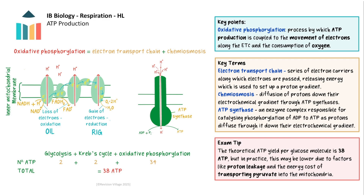34 molecules of ATP are produced in oxidative phosphorylation from the 6 reduced NAD and 2 reduced FAD produced from one glucose molecule. The theoretical ATP yield per glucose molecule is therefore 2 from glycolysis, plus 2 from the Krebs cycle, plus 34 from oxidative phosphorylation, giving a total of approximately 38 ATP. In reality the number varies due to the leaking of protons through certain protein channels and the requirement for ATP for transporting pyruvate from the cytoplasm into the mitochondria.